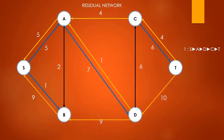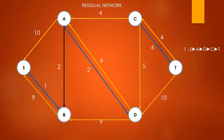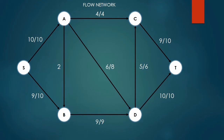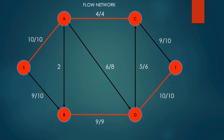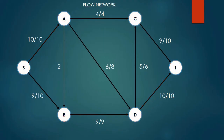Now we update the residual network. We are now pushing back 10 from S to A, so we can't push anything forward. For edge A to D, we are pushing back 6, so we can only push forward 2. For edge D to C, we are pushing back 5, so we can only push 1 forward. From edge C to T, we are pushing back 9, so we can only push 1 forward. Edges S to A, A to C, B to D, and D to T are now full. We cannot find any available path with capacity from source to sink. The maximum flow corresponds to the total flow leaving the source or entering the sink — in this case 10 plus 9, so the maximum flow of this network is 19.